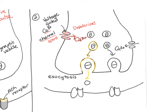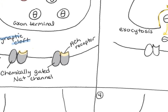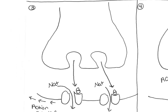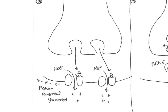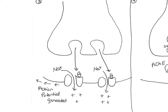Now the acetylcholine molecules are in the synaptic cleft. In step three, acetylcholine molecules travel across the synaptic cleft and bind to the ACh receptor on the chemically regulated sodium channels of the postsynaptic cell. The binding of acetylcholine causes the sodium channels to open, and extracellular sodium diffuses into the postsynaptic cell, causing it to depolarize.